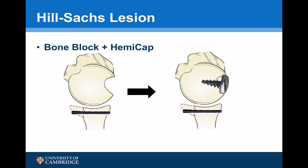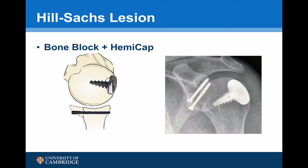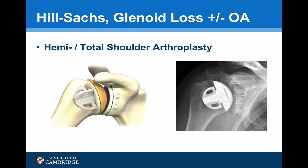Another option is to use a hemi-cap implant to fill the Hill-Sachs defect, once again coupled with an anterior bone block procedure. Here is a post-operative X-ray of a hemi-cap procedure coupled with a Latarjet procedure. Very occasionally, the bone loss is so severe that an osteochondral allograft or hemi-cap are not sufficient to fill the defect, in which case a hemi or total shoulder replacement may be considered.